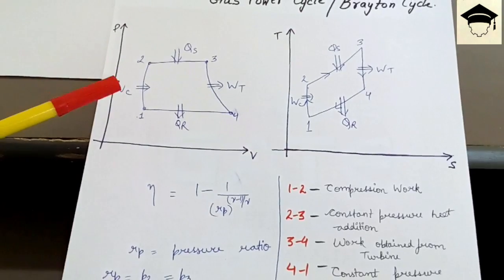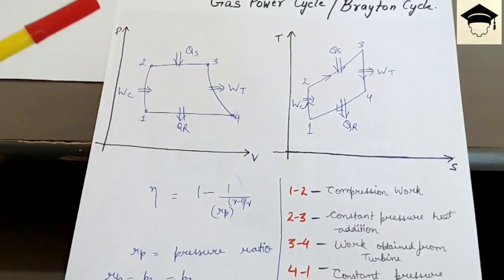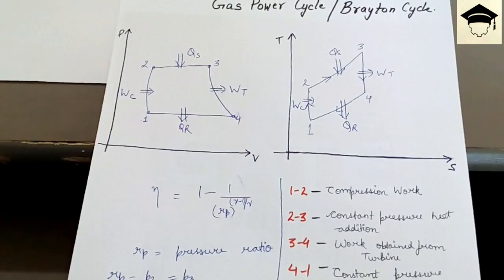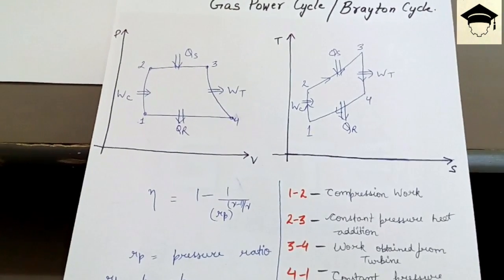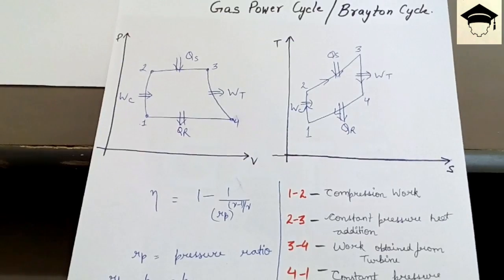So work is provided from one to two and from two to three there is constant pressure heat addition in the combustion chamber. We use the fuel.